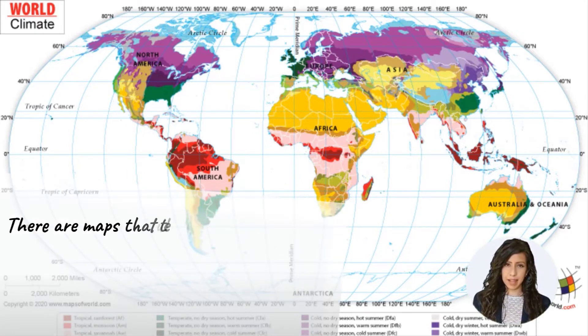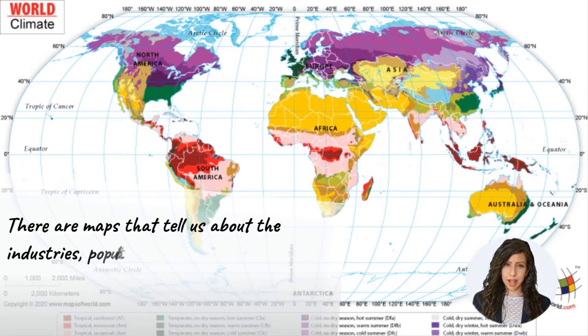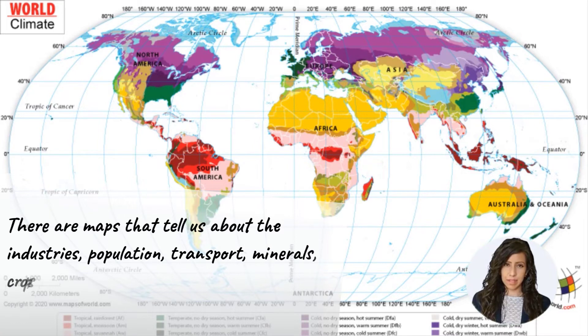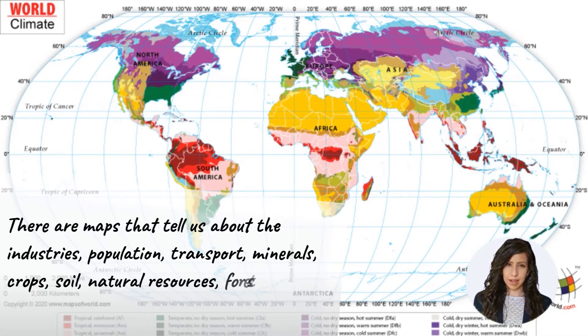Inke alawa, aise bhi maps hain jo humein kisi kshetra ke udyogon, jansankhya, transport, minerals, faslon, mitti, prakritik sansadhanon, jangalon aur vanya-jeevan ke baare mein batate hain.